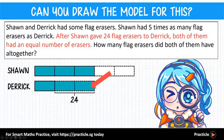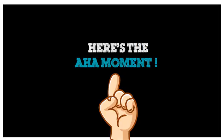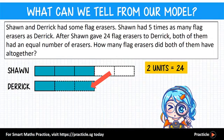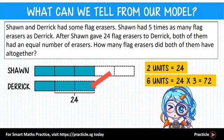Now let's use our model to solve this question. How many flat erasers did both of them have altogether? We can see from the model that they had 6 units in all. Since we already know that 2 units represent 24 erasers, we can find the value of 6 units by multiplying 24 by 3, and this gives us 72 erasers. Another problem solved.